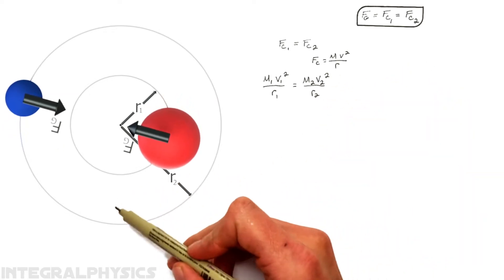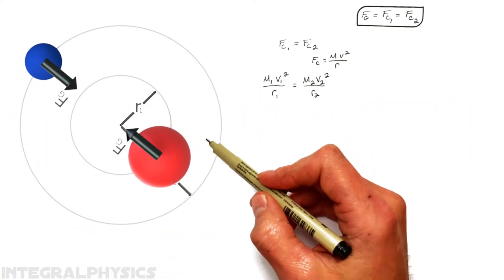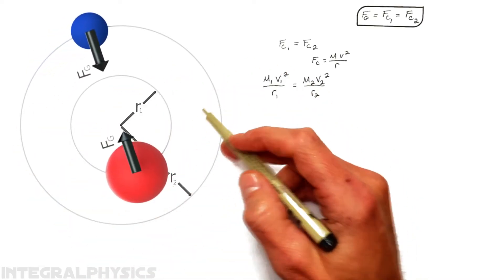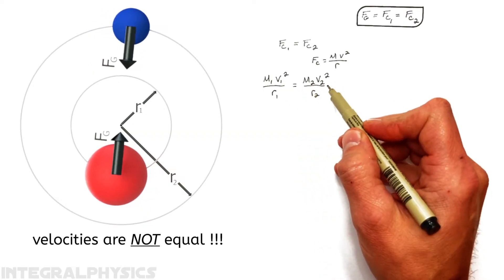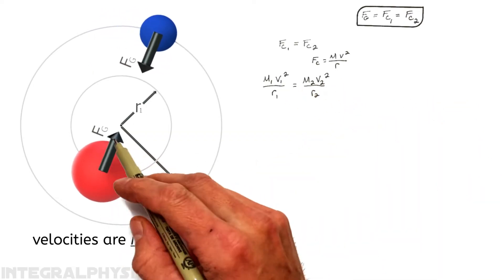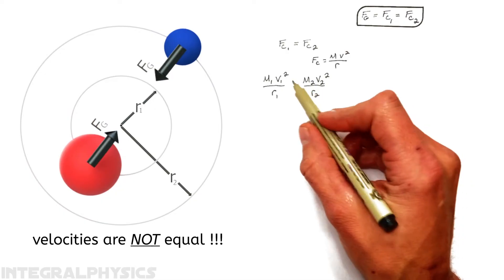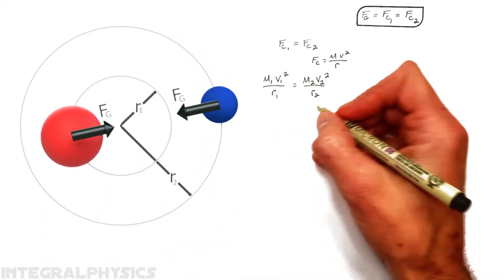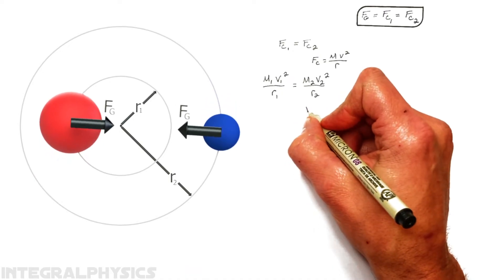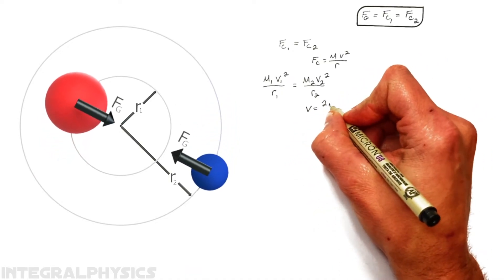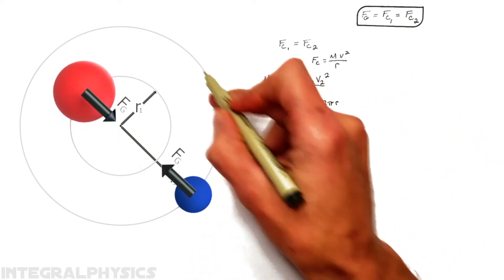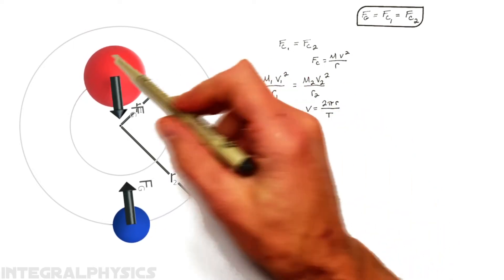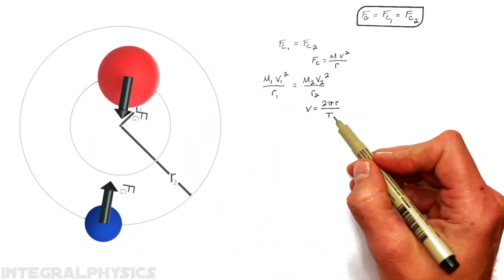And realize, because this outer orbit is a larger radius, this smaller mass out here is actually going to be moving at a greater velocity. These two velocities are not the same. Now, finding where this barycenter is involves getting rid of the velocity here. Now, realize, for anything going in a circle, the velocity is given by 2 pi r, that is the circumference of the circle, divided by the time it takes for that object to move once around a circle, or what we call the period.